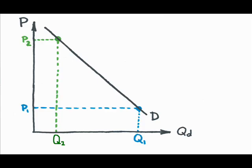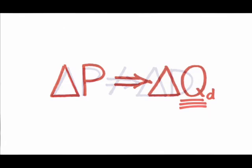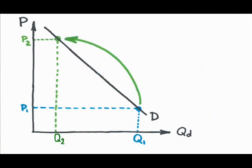The demand itself did not change, since both of the combinations, P1-Q1 and P2-Q2, were already part of the existing demand curve. A change in the price of the product itself will never change the underlying demand, only the quantity demanded, shown by a movement along the existing demand curve.